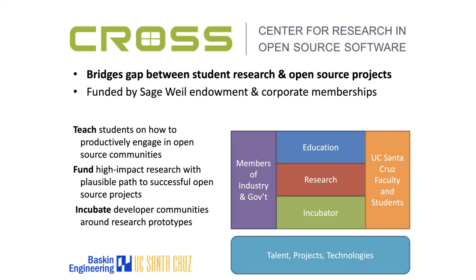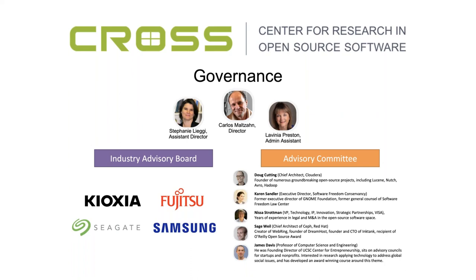Sage is an example of that, and so are all the incubator projects we currently have at CROSS. CROSS is basically bridging this gap between student research and open source software. There are three components: we teach students how to engage in open source communities, we fund high-impact research, and we incubate developer communities around PhD prototypes. It's actually the last one that is really the key part of this effort — it drives all the other stuff. The governance is modeled after the IUCRC model by the National Science Foundation for industry-university collaboration research centers.